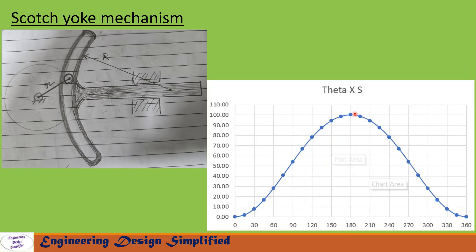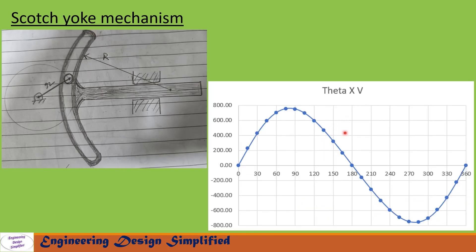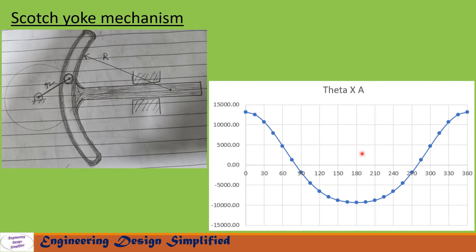In this graph we have plotted theta versus plunger displacement, with theta from 0 to 360 degrees along the horizontal axis and displacement in millimeters along the vertical axis — showing the variation of displacement with respect to theta. In the next graph, theta versus velocity of the plunger is plotted. Finally, in the third graph, theta versus acceleration of the plunger is shown, with theta from 0 to 360 degrees along the horizontal and acceleration along the vertical.